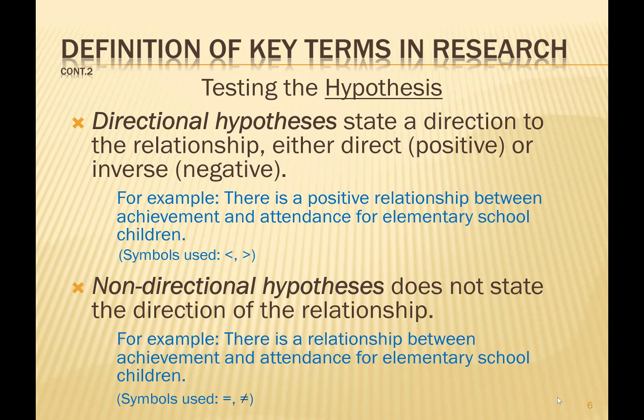Here's an example of a directional hypothesis: there is a positive relationship between achievement and attendance for the elementary school children. The word 'positive' is the direction that this suggests, so therefore this becomes a directional hypothesis.